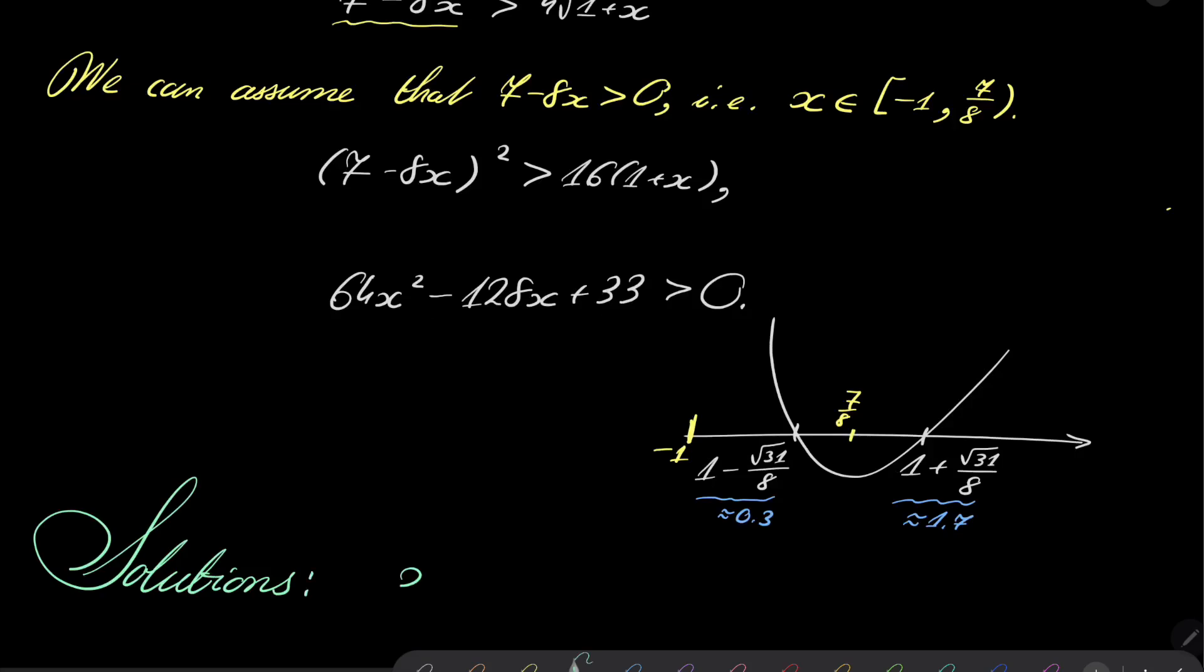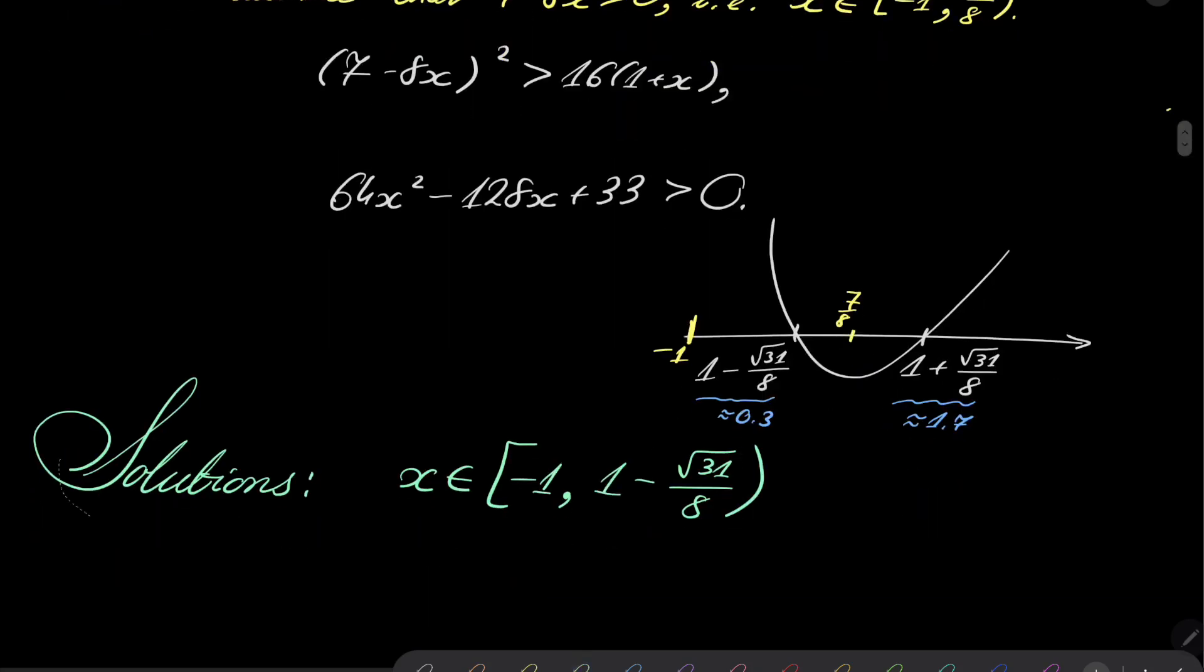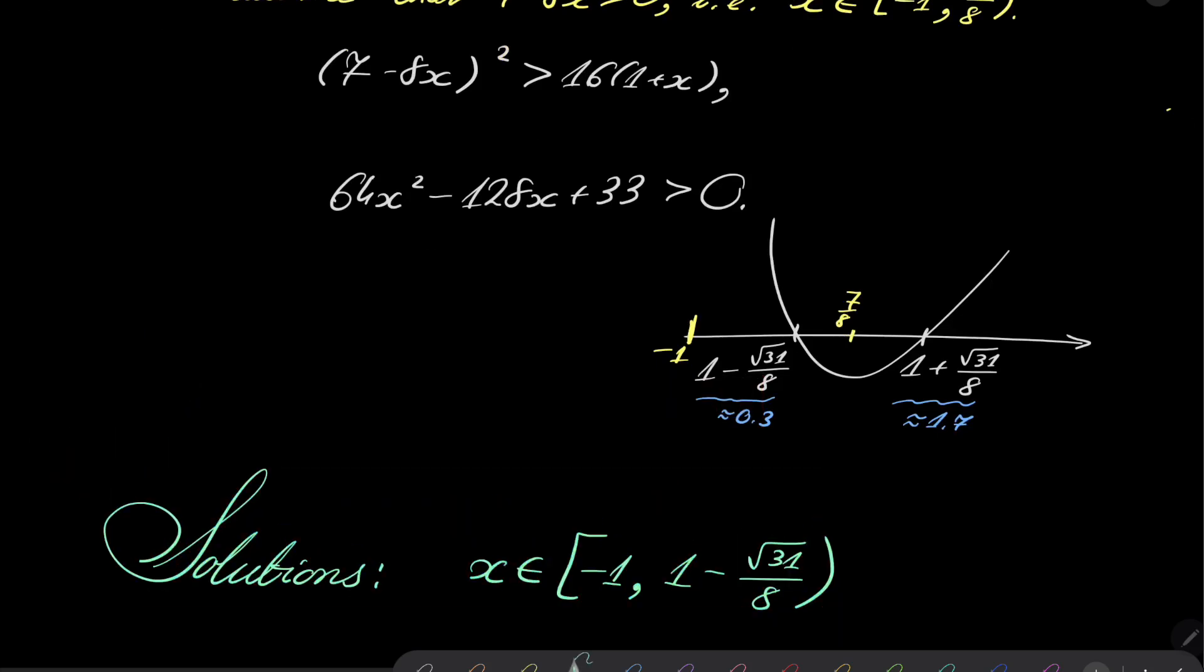Solutions: x is in the interval from minus 1 to 1 minus square root of 31 over 8, open. And this really closes our problem.